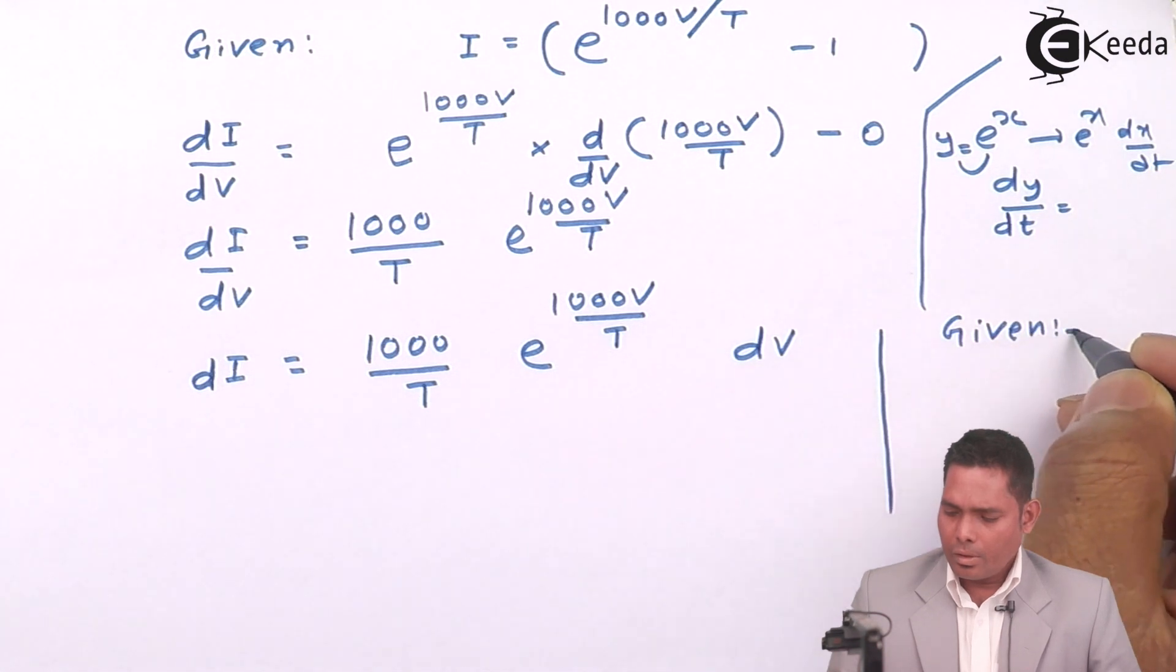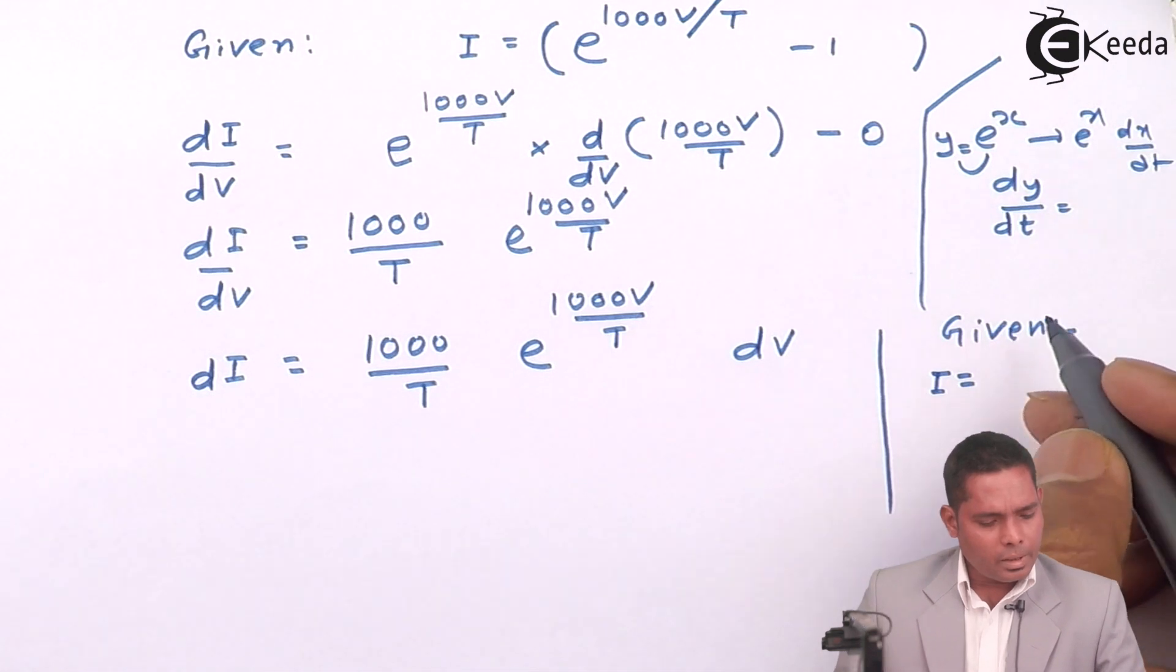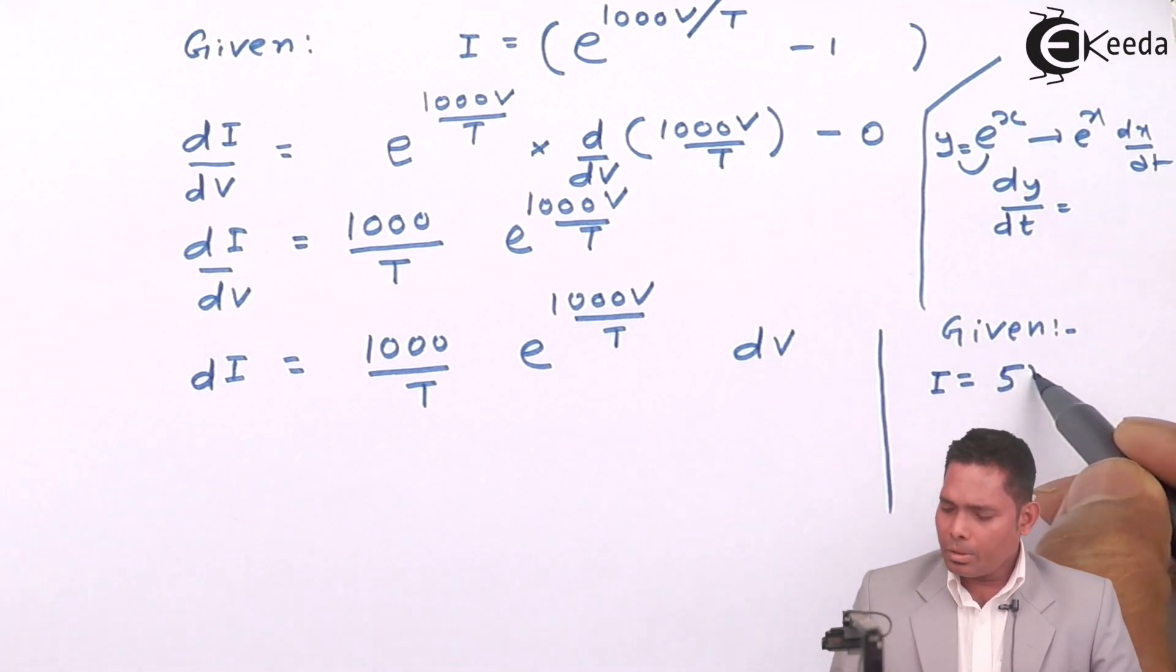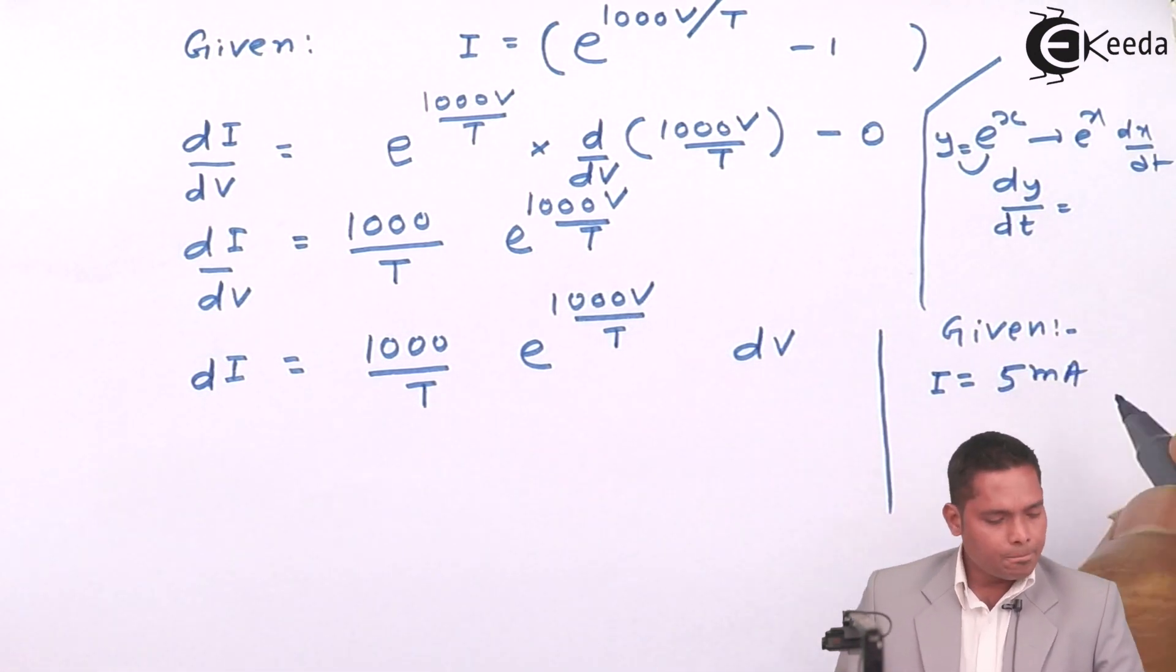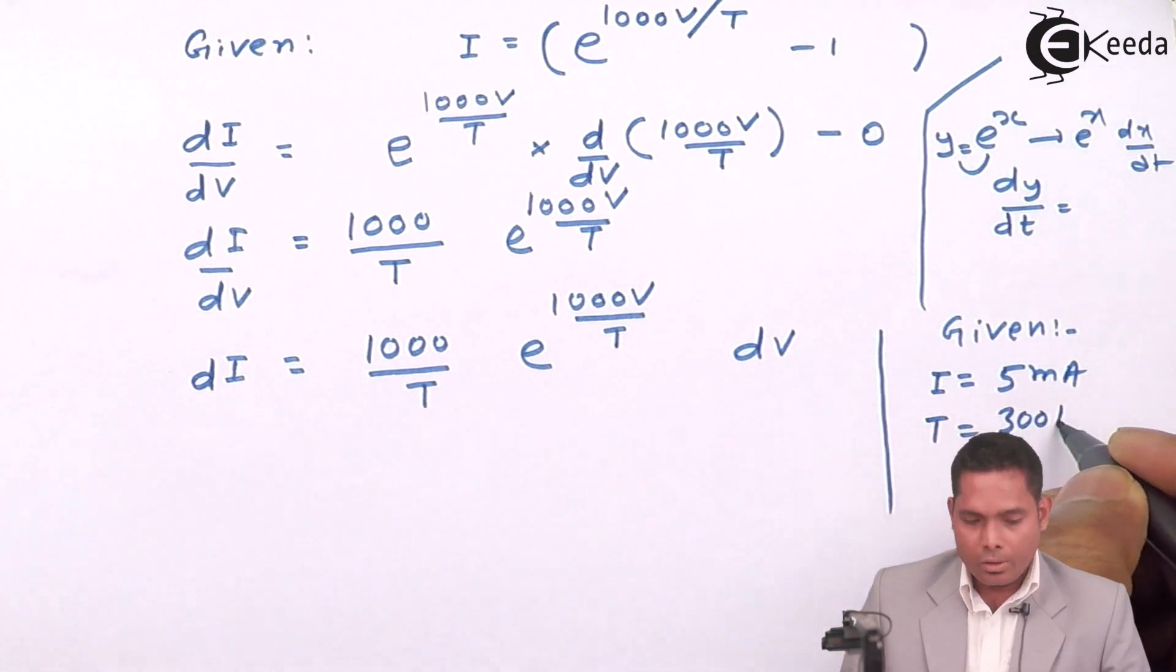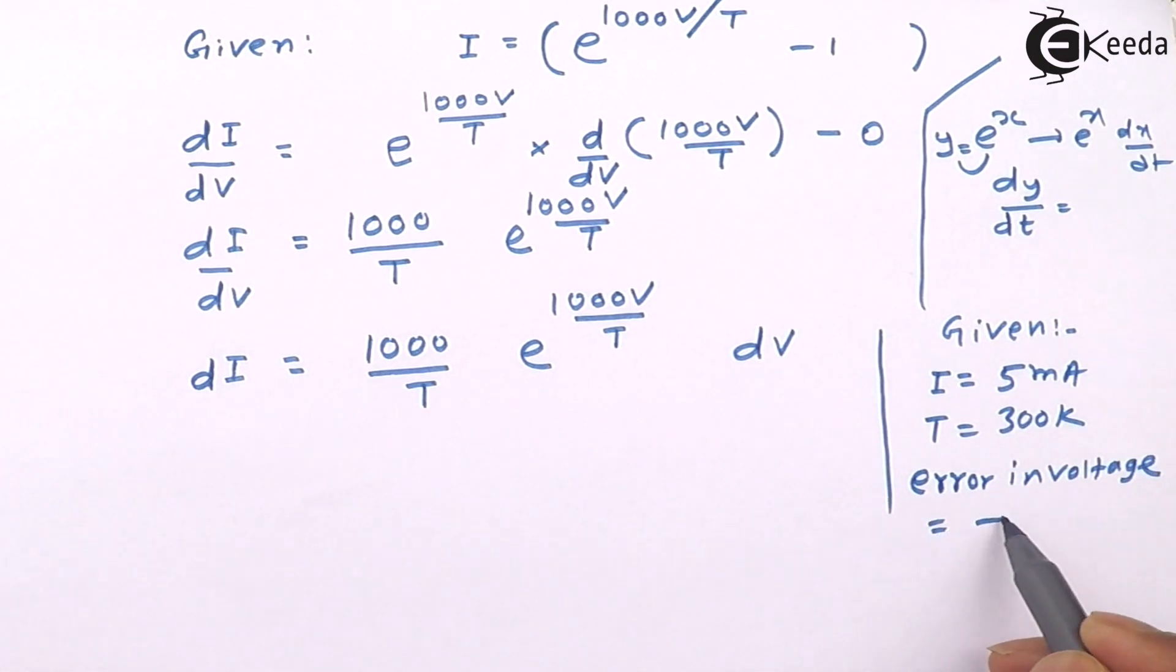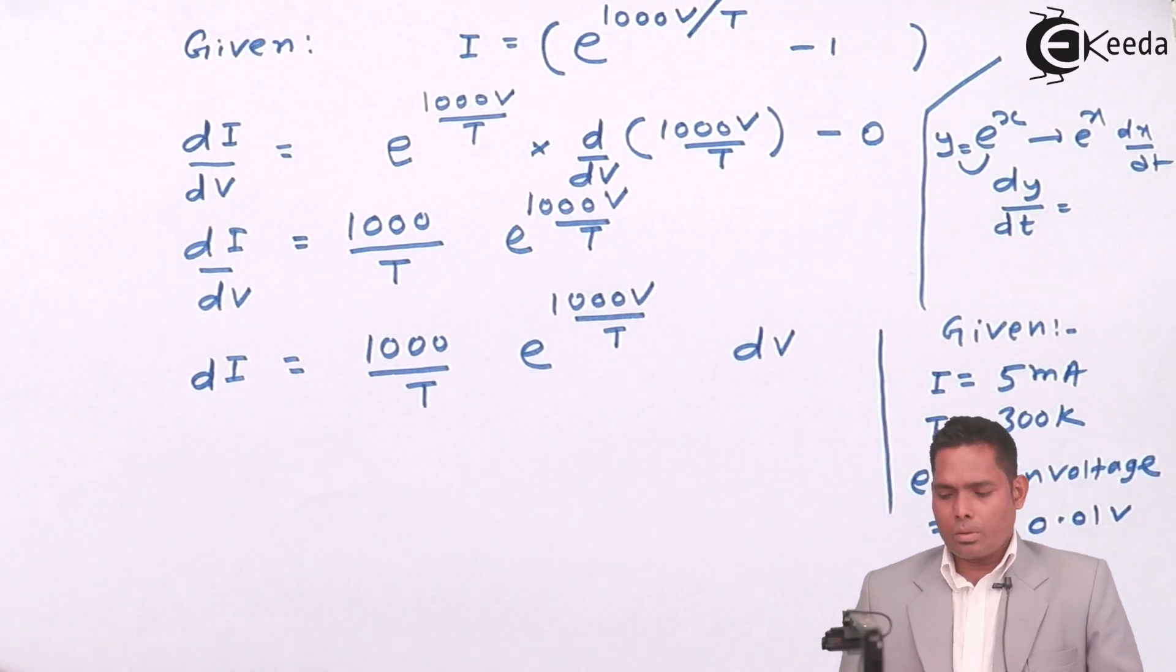Given: I equals 5 milliampere - the current the student is measuring is 5 milliampere. Temperature is 300 Kelvin. And the error in the voltage measurement is plus minus 0.01 volt.